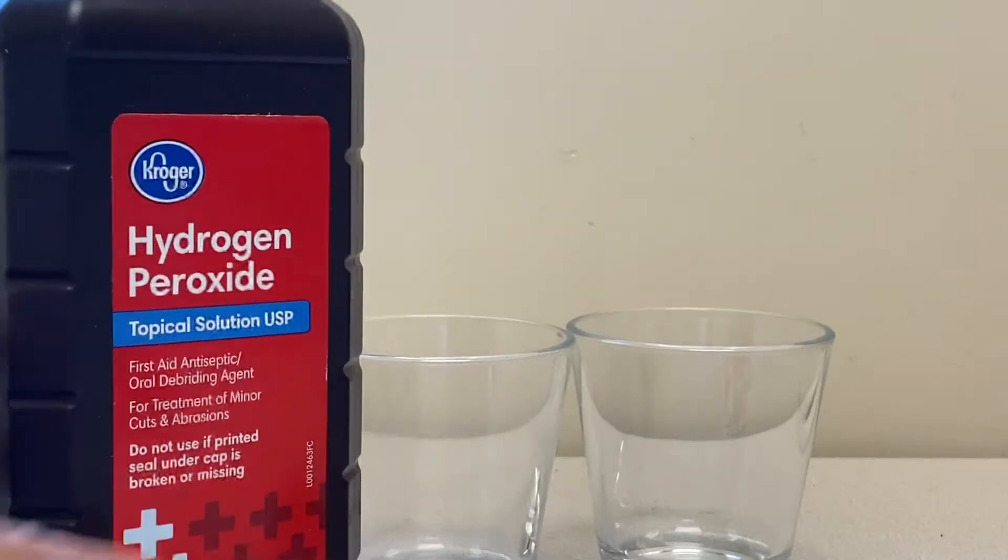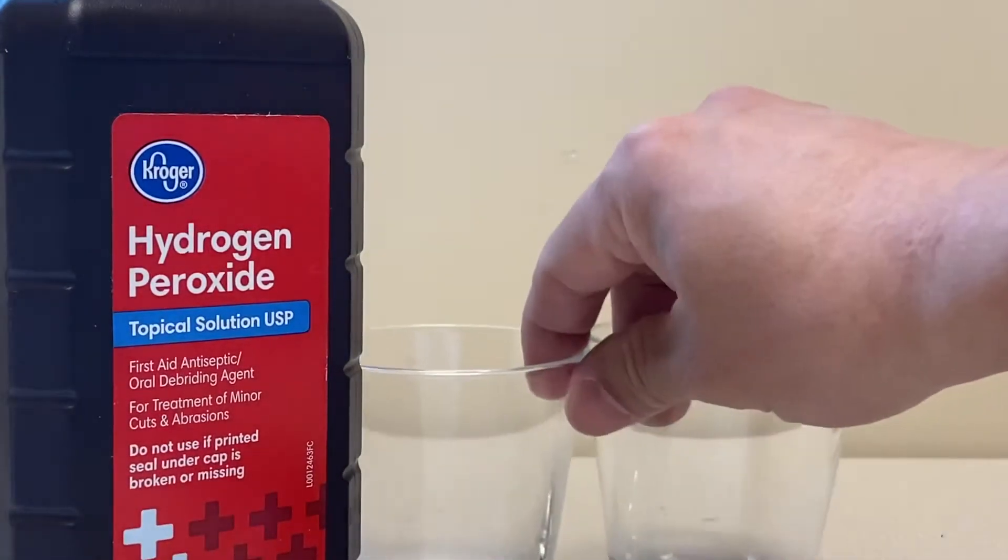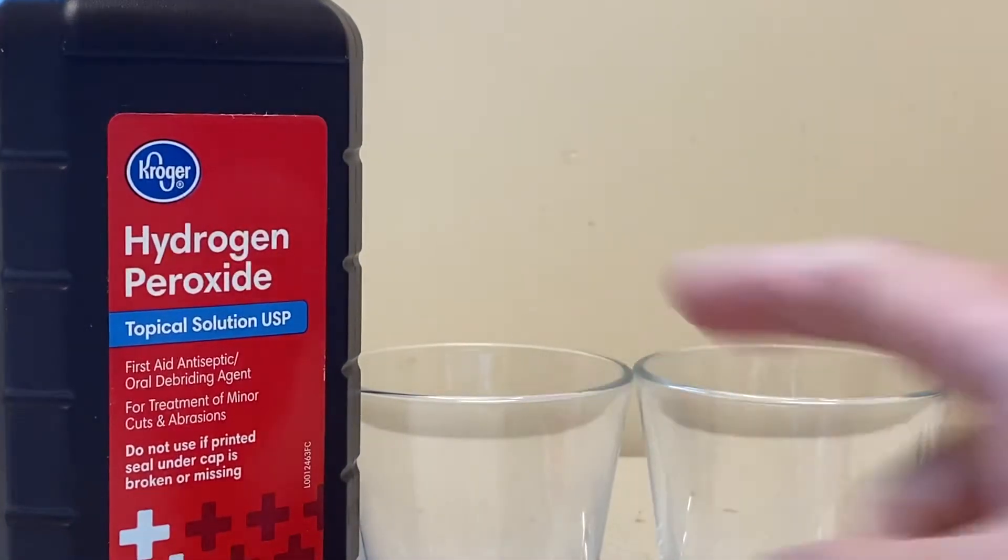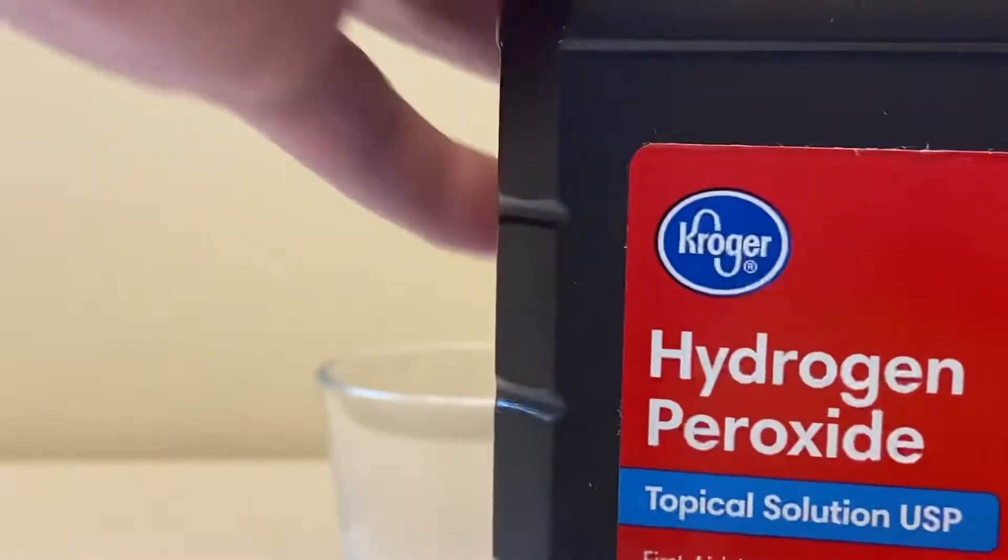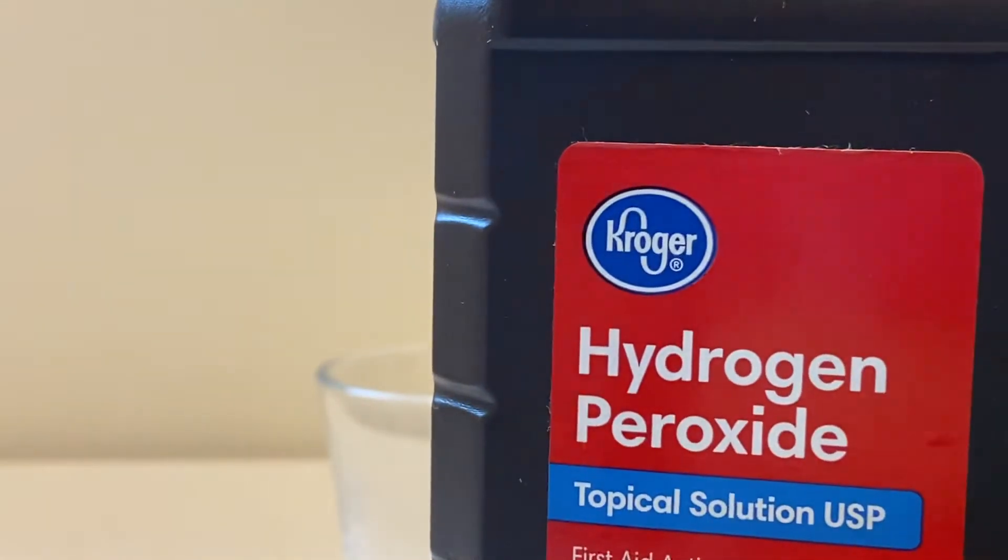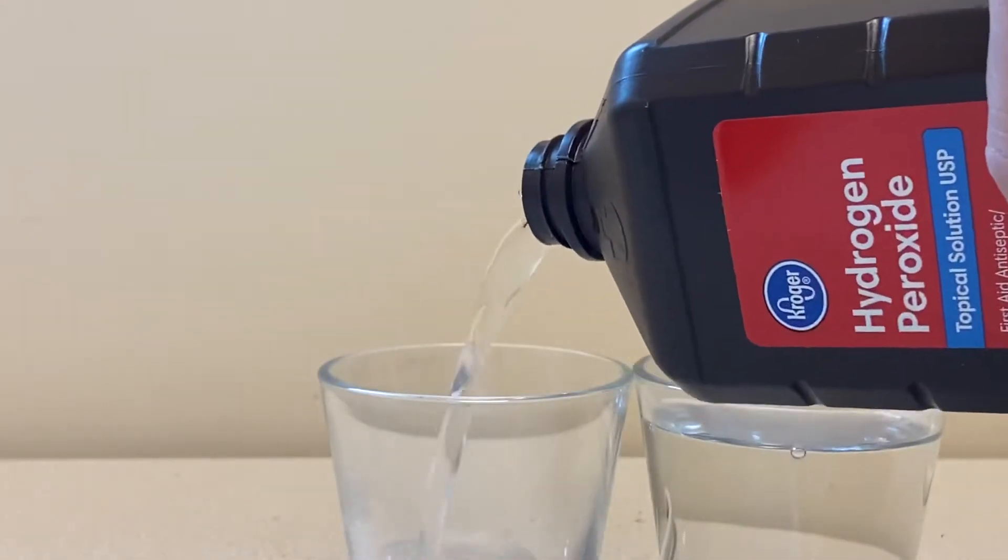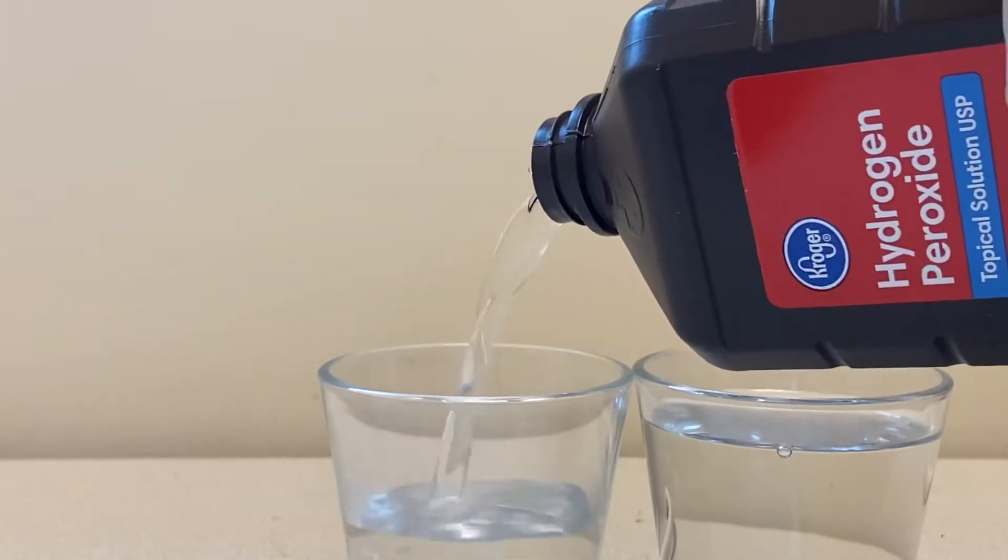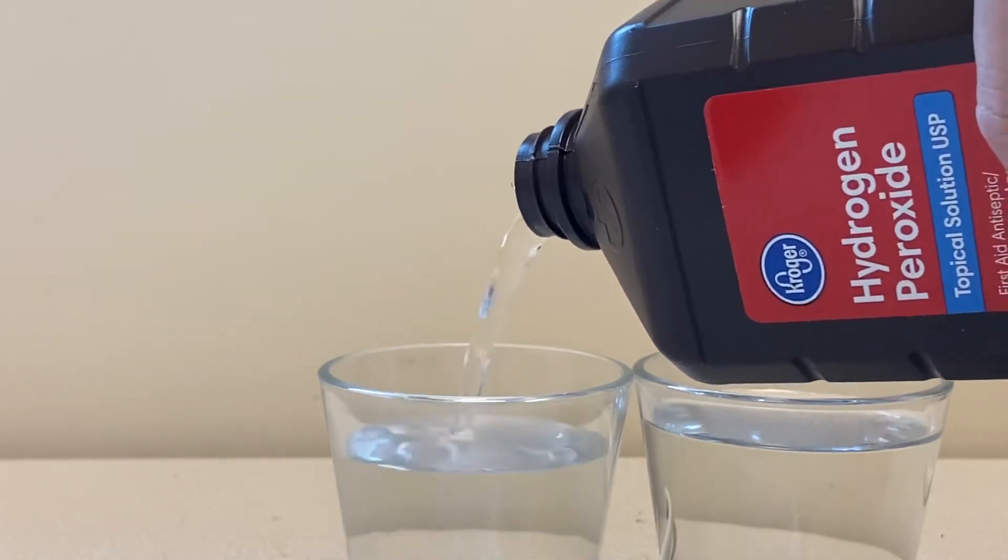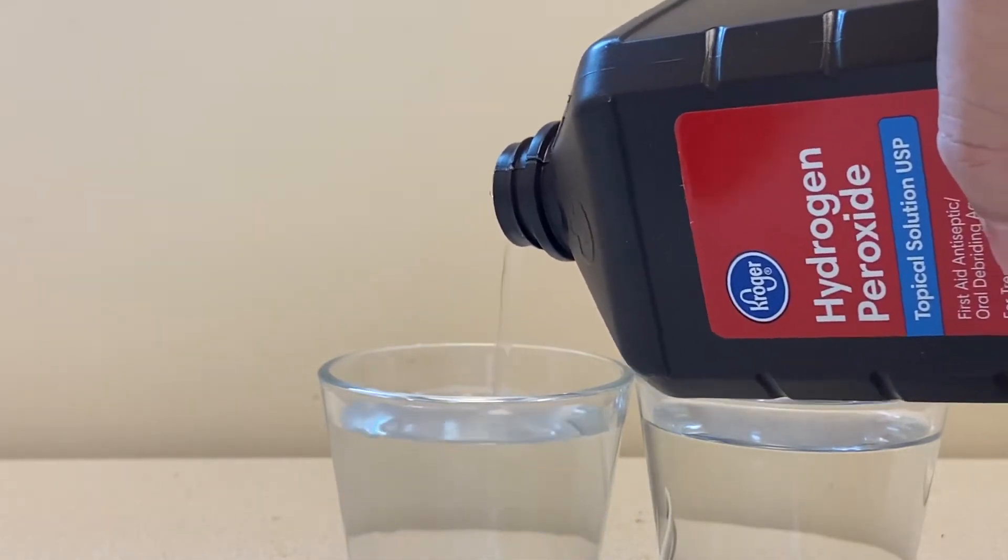Now I'm going to pour this hydrogen peroxide into these two cups. The left is my control group, the right is my test group. Hydrogen peroxide, three percent. Fill it up, let's fill it up about the same height. Again, this is the aqueous solution of hydrogen peroxide.